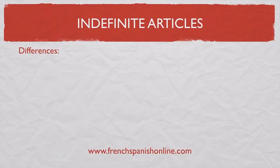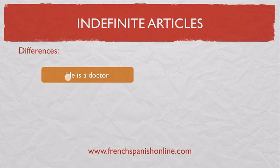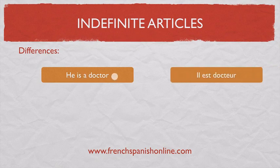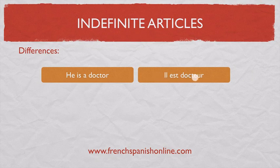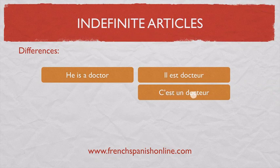This lesson is interesting because it shows the difference between English and French. For example, 'He is a doctor.' In English you need an indefinite article. In French, nothing: 'Il est docteur.' However, if you say 'C'est un docteur', in that case we do need the indefinite article.